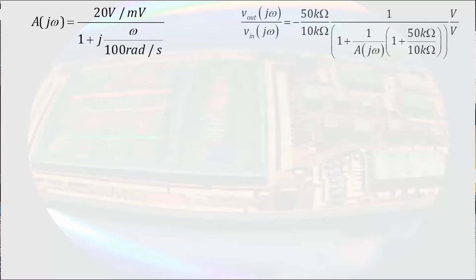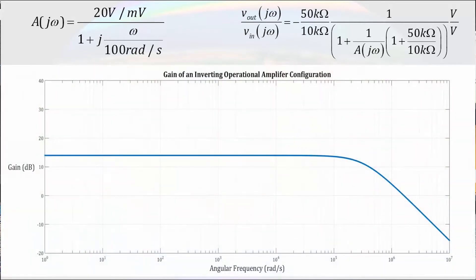We can look at the transfer function of an inverting amplifier with a gain of 5 volts per volt. I thought it would be a little too messy to substitute A of j omega into the transfer function, so I will leave them separate. We can see that at low frequency we have a gain of 5 volts per volt, which corresponds to 13.98 decibels.